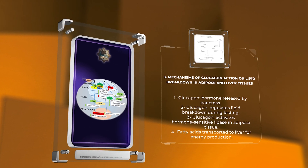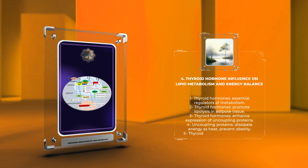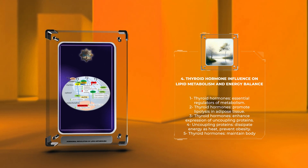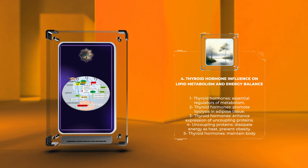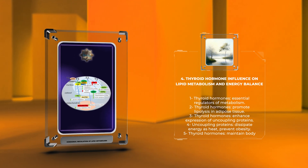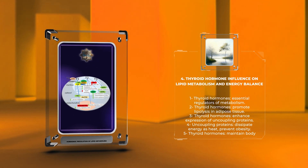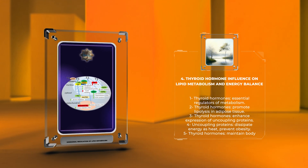Thyroid hormone influence on lipid metabolism and energy balance. Moving on to thyroid hormones, they are essential regulators of metabolism, including lipid metabolism. The thyroid gland produces thyroxine, T4, and triiodothyronine, T3, which control the basal metabolic rate, heat production, and energy expenditure. Thyroid hormones promote lipolysis in adipose tissue by increasing the activity of hormone-sensitive lipase. They also enhance the expression of uncoupling proteins, which dissipate energy as heat instead of storing it as lipids. This phenomenon is crucial in maintaining body temperature and preventing obesity.